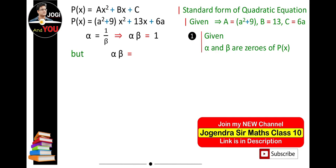We know by the relation of zeros and coefficients of a polynomial that the product of zeros αβ is equal to C/A. So C is 6a and A is a² + 9. This is equation 2.